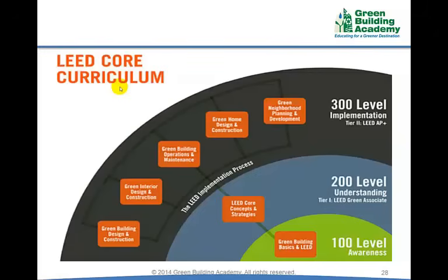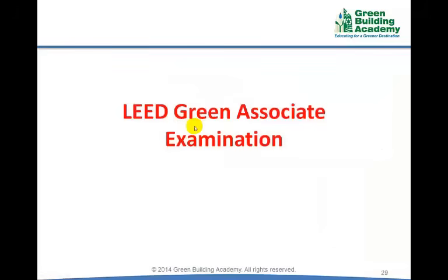The LEED curriculum is divided into three levels of knowledge: 100, 200, and 300. Level 100 refers to awareness, 200 refers to understanding, and 300 refers to implementation. After completing the first two chapters of this course you will have a knowledge level of 100. After completing this course and passing the LEED Green Associate examination you will have a knowledge level of 200. After passing the LEED AP Specialty examination you will be able to implement concepts in a project, achieving knowledge level 300. To be recognized in the construction market you should target to become a LEED AP.